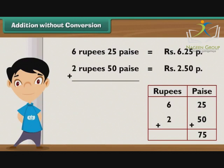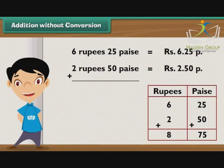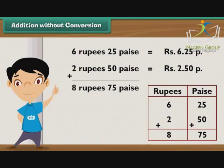Step 2: Add the numbers in the rupees column. 6 plus 2 is equal to 8. Write 8 in the rupees column. The result of the addition is 8 rupees 75 paise.